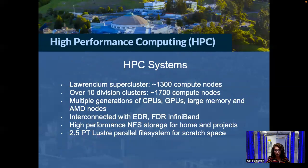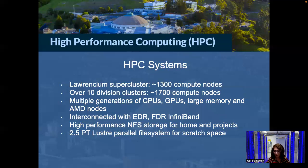The HPC system at the lab includes a shared Lawrencium supercluster and over 10 divisional clusters. All these clusters are hosted in a supercluster infrastructure consisting of a dedicated firewall subnet, one-time password authentication, and multiple interactive login nodes. All the compute nodes are interconnected with EDR and FDR InfiniBand. They all have shared third-party compilers, libraries, applications, and software packages. All the compute nodes share NFS home directories and fast Lustre parallel file systems. This supercluster infrastructure is used by all clusters within the data center to facilitate the movement of researchers across different projects and the sharing of compute resources.